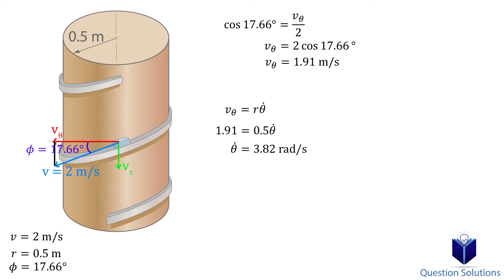Next, we need the first and second time derivatives of our radius. Since the radius is a constant, both of those derivatives are zero. Also, since the angular velocity is a constant, its second derivative is also zero.